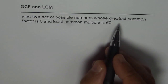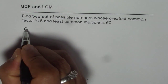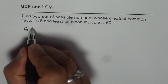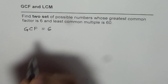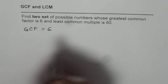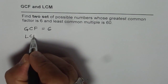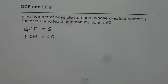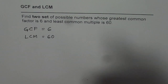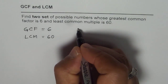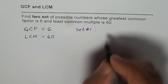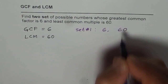So let me repeat the question. You have to find two possible sets of numbers whose greatest common factor, that is GCF, is equal to 6, and least common multiple, LCM, is 60. You need to find two sets. Now one set is very easy — one set is the numbers itself. So set number 1 should be 6 and 60.